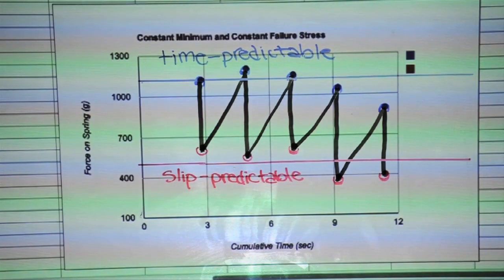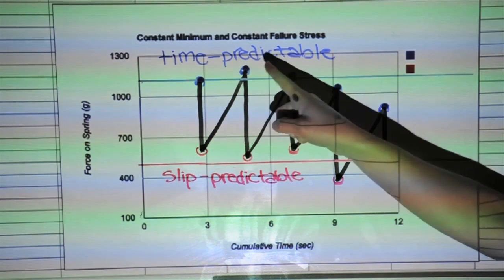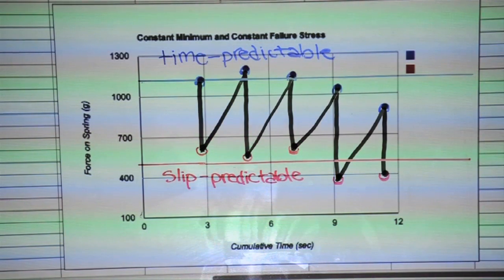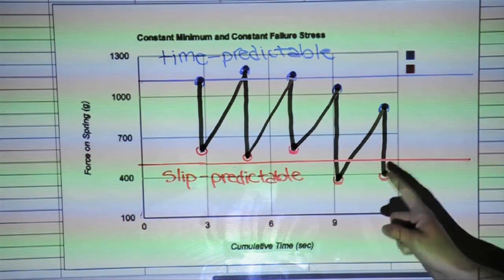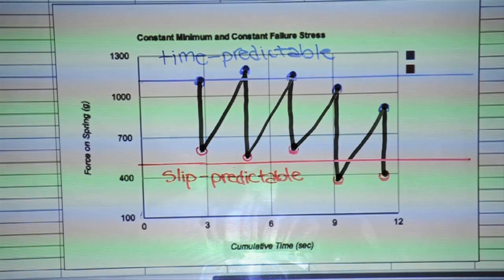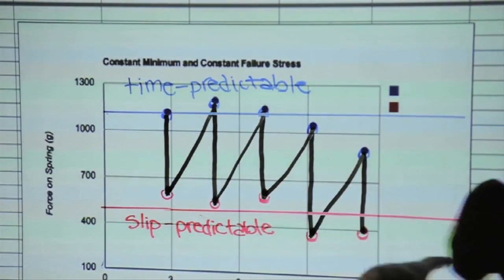Another way of framing the time-predictable hypothesis is that earthquakes occur when a failure stress is reached. That's what these blue dots represent. And another way of looking at the slip-predictable hypothesis is that earthquakes drop their stress to the minimum or background amount, and that's what these red dots represent. So I've eyeballed and drawn in best-fit lines for these hypotheses. And how does our data compare? As you can see, neither hypothesis perfectly matches the data, so we can't use constant minimum and constant failure stress as accurate earthquake predictors.